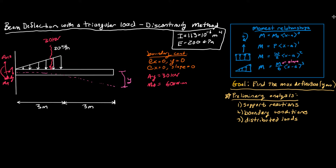We also need to think about our distributed loads. When we're using discontinuity function methods, the reason they are so beneficial is because we only have to write one moment equation for the whole beam. One caveat is that we need to extend those distributed loads, because discontinuity functions assume that once a distributed load starts, it goes to the end of the beam. So we need to extend this distributed load all the way to the end of the beam, with arrows going down all the way to the end on top.